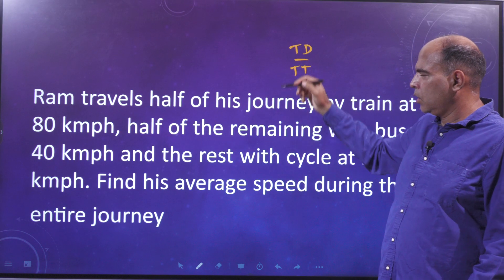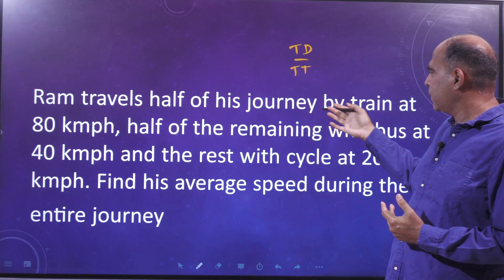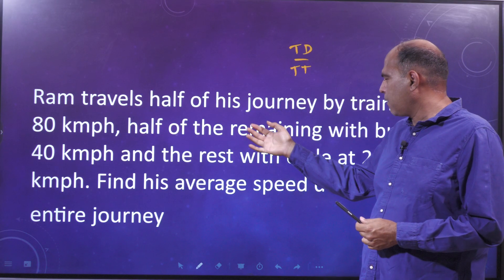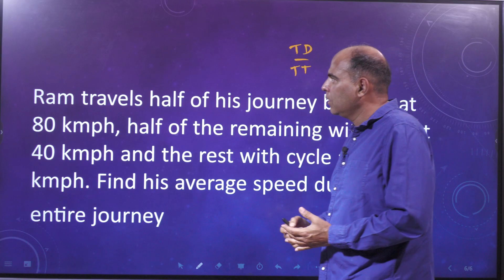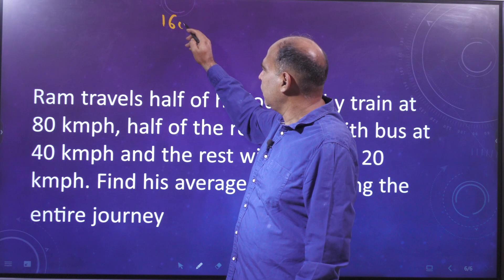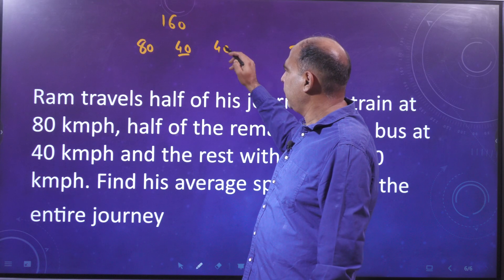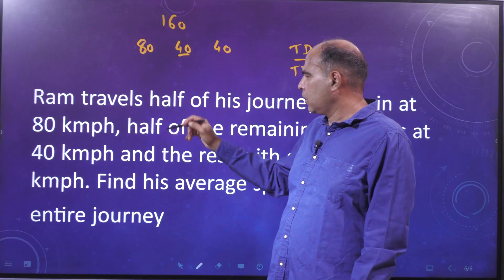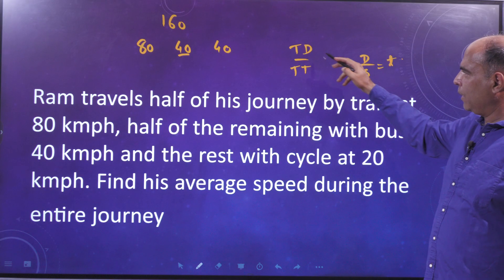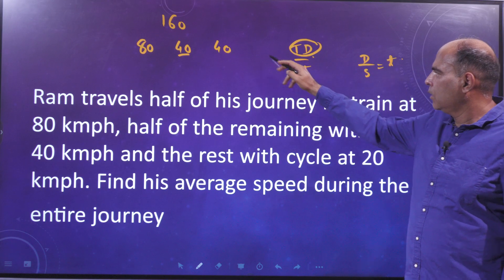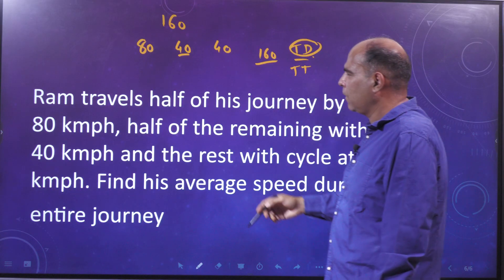He is traveling half his journey by train at 80 km/h, half of the remaining by bus at 40 km/h, and the rest by cycle at 20 km/h. Assume a total journey of 160 km so the individual components work out cleanly: 80 km by train, 40 km by bus, and 40 km by cycle. Then divide each distance by its respective speed to find the time taken.